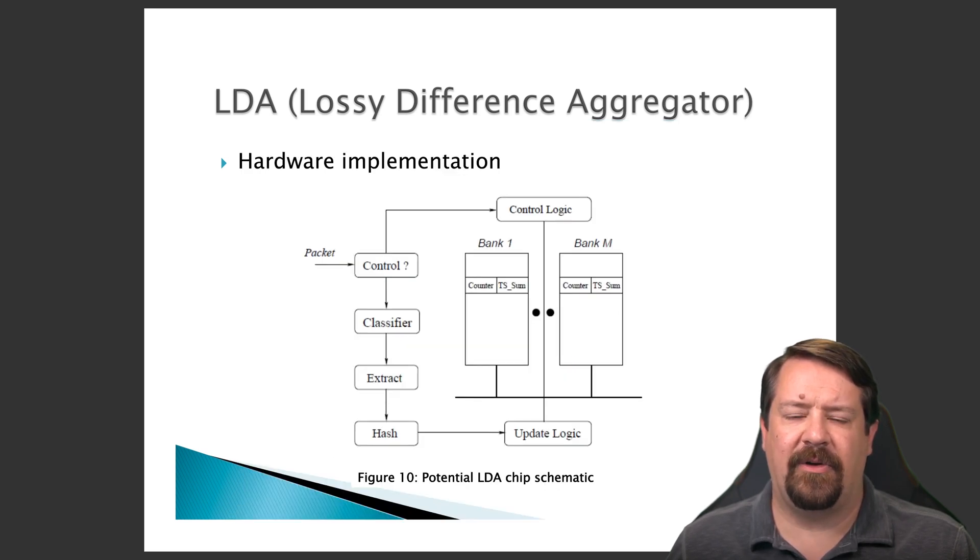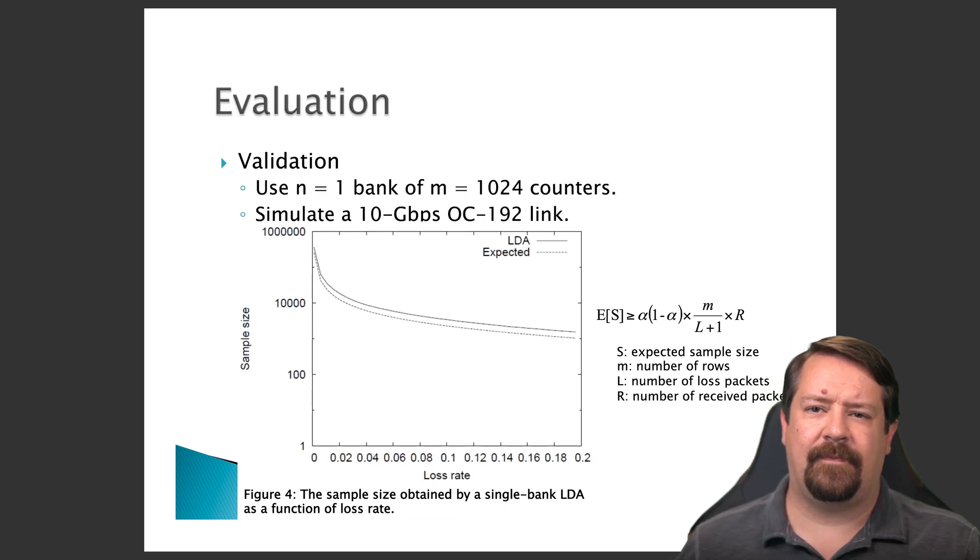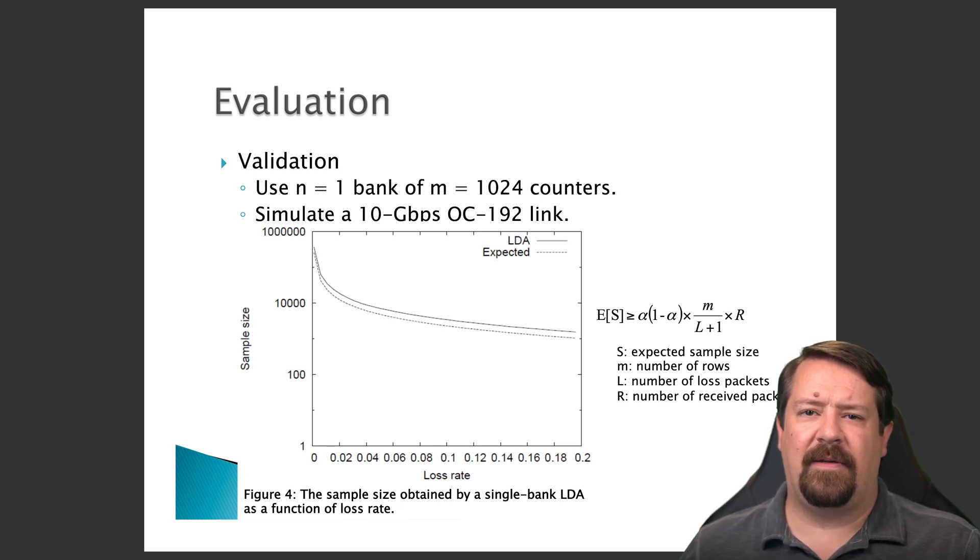While the authors of this paper do not perform a hardware implementation, they do look at the level of complexity and what would be required to implement this scheme in hardware. To evaluate the approach, the authors simulate a 10 gigabit per second link, and then drop packets at varying rates in order to see how well their difference aggregator performs.